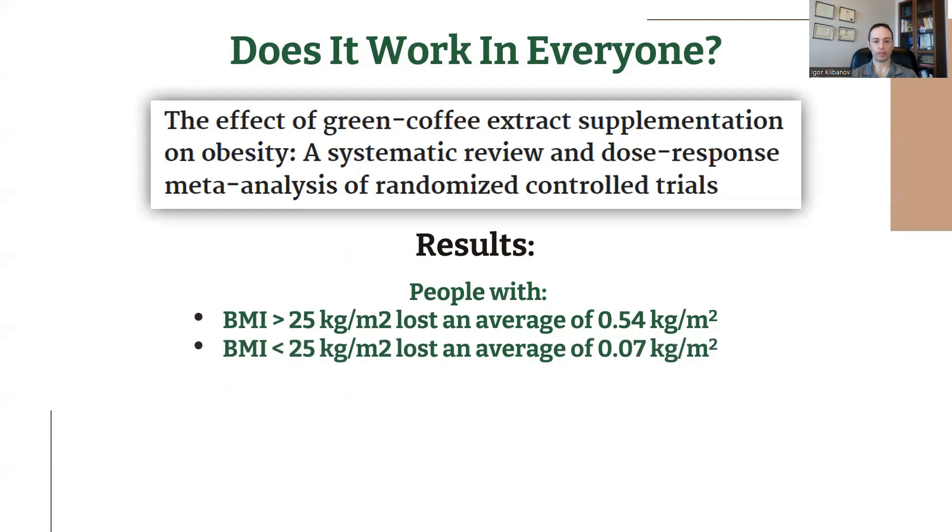Now those who are of normal weight or even underweight, they barely lost anything. The 0.07 is basically just a fluke. Now, what does this mean? What do all these BMI numbers mean?